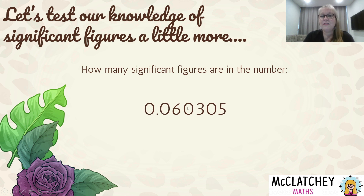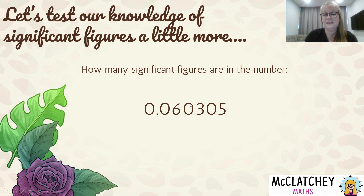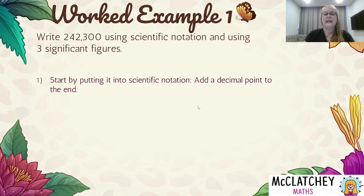How many significant figures are in this number? There are five. Those leading zeros are not significant; zeros between two non-zero digits are significant. So rounding to one significant figure gives 0.06; rounding to two significant figures gives 0.060; rounding to three significant figures gives 0.0603, and so on.